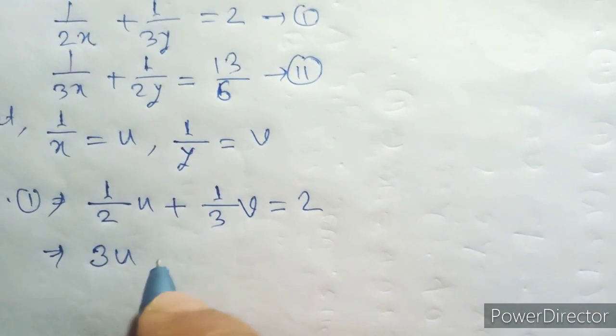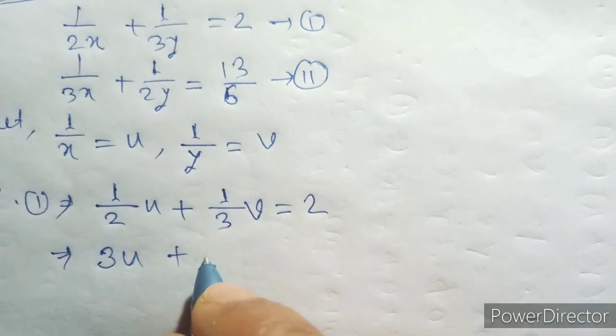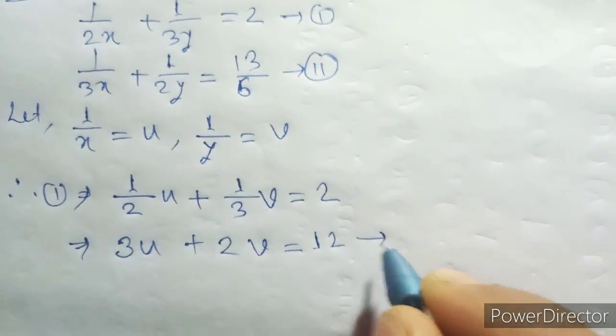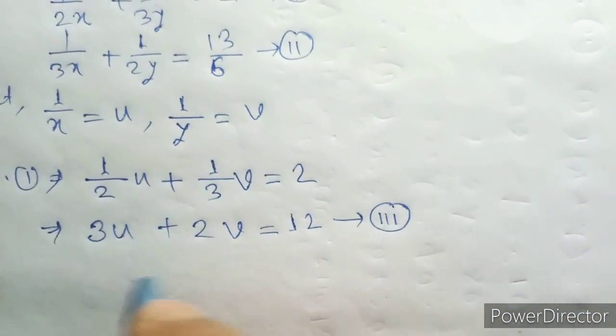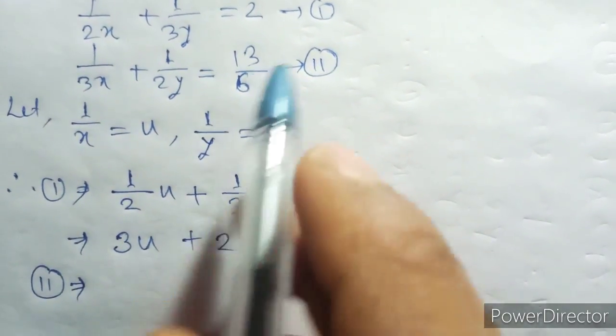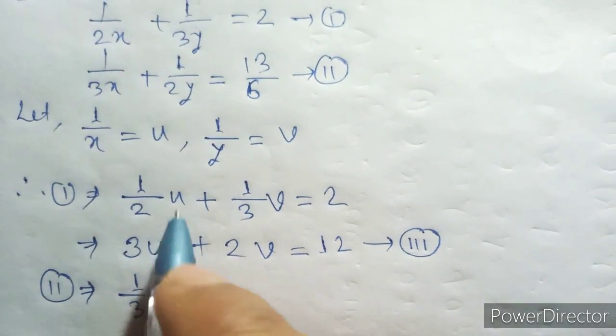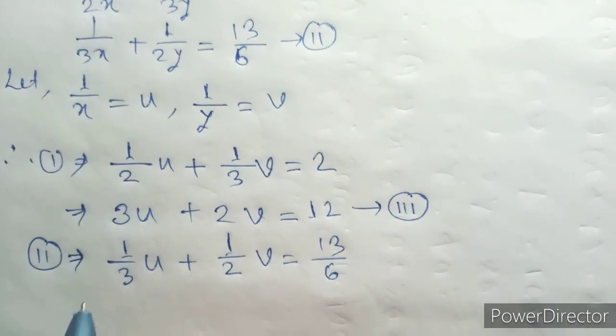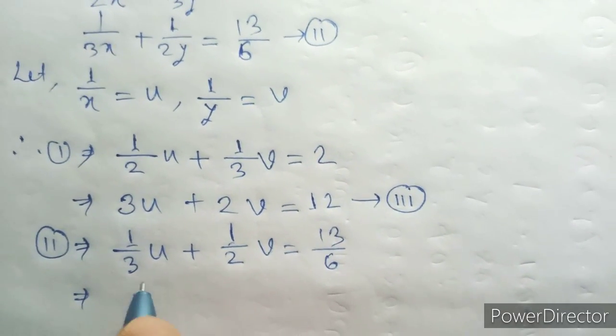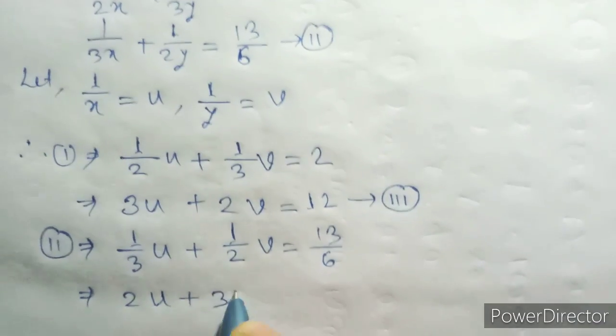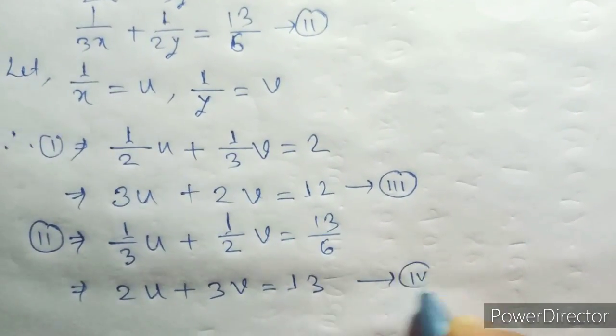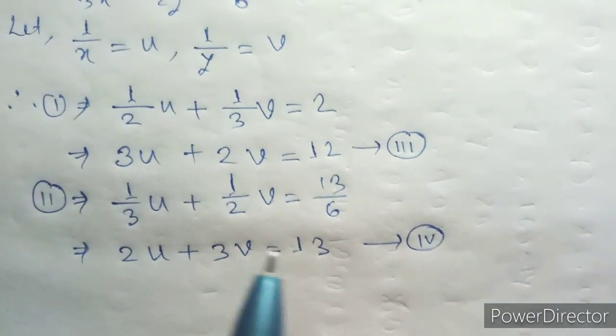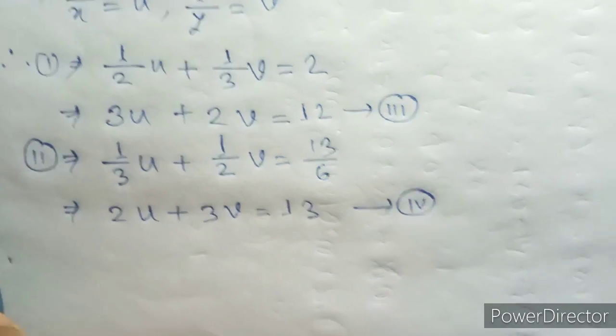We are making 3 U plus 2 V equal to 12. This is equation number 3. From equation number 2, we get 1 by 3 U plus 1 by 2 V equal to 13 by 6. Now I multiply to clear denominators. This implies 2 U plus 3 V equal to 13, which is equation number 4.